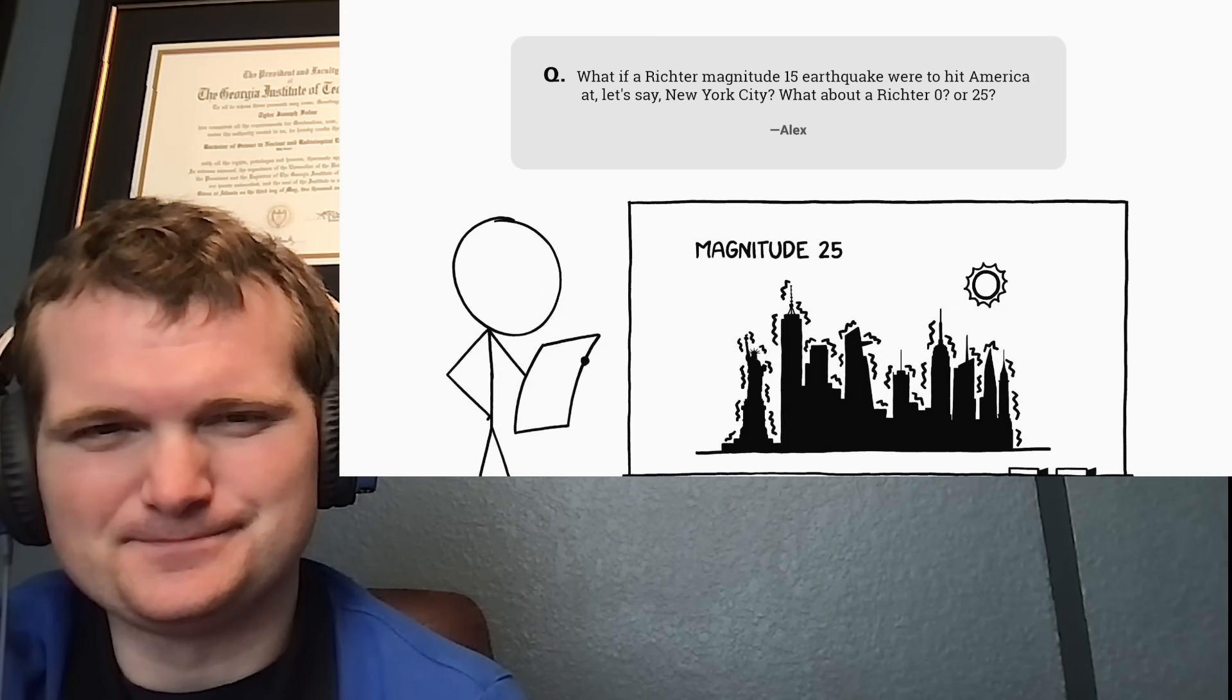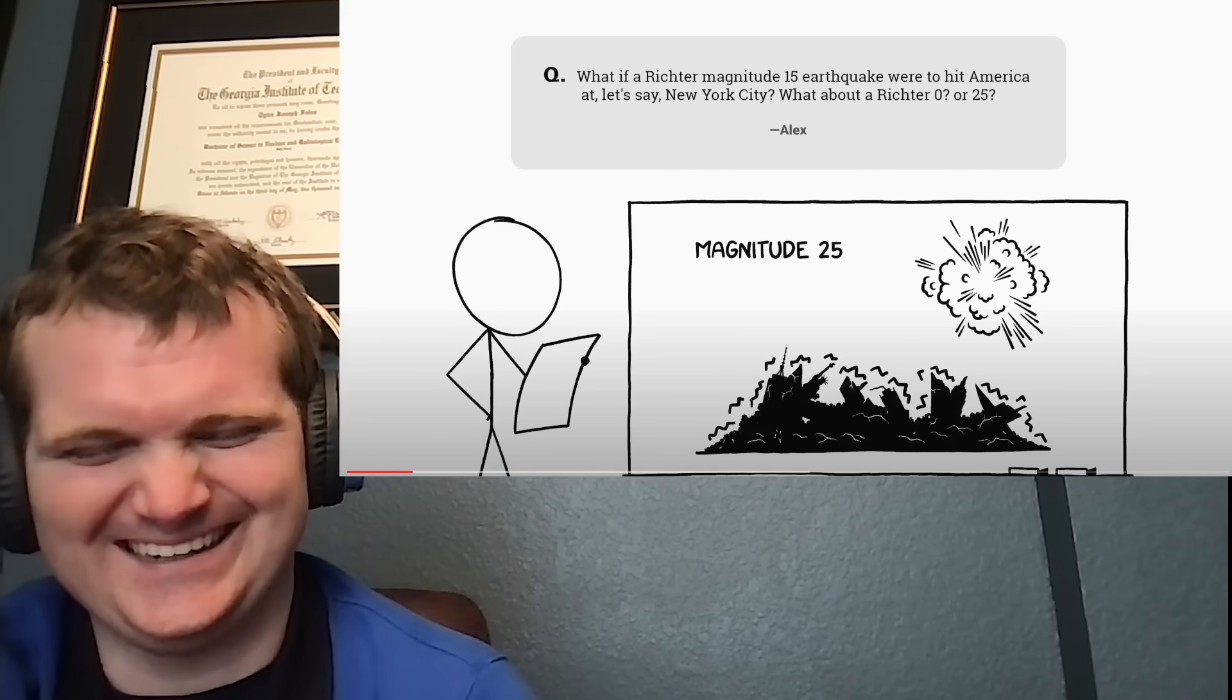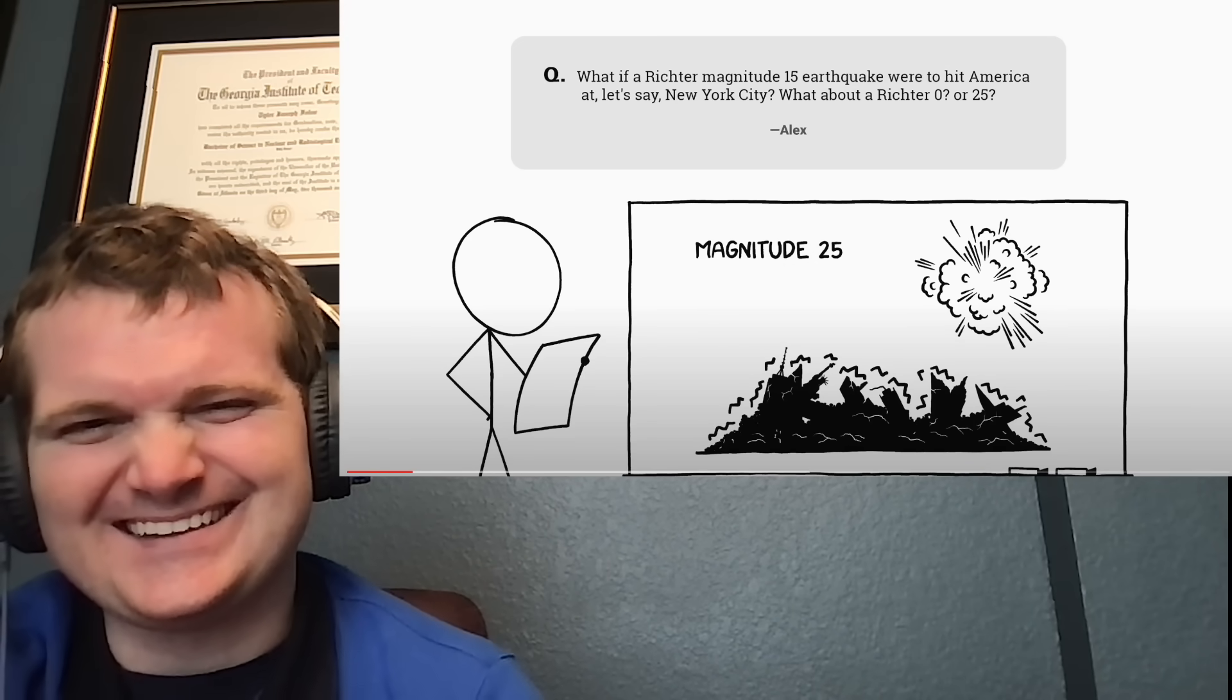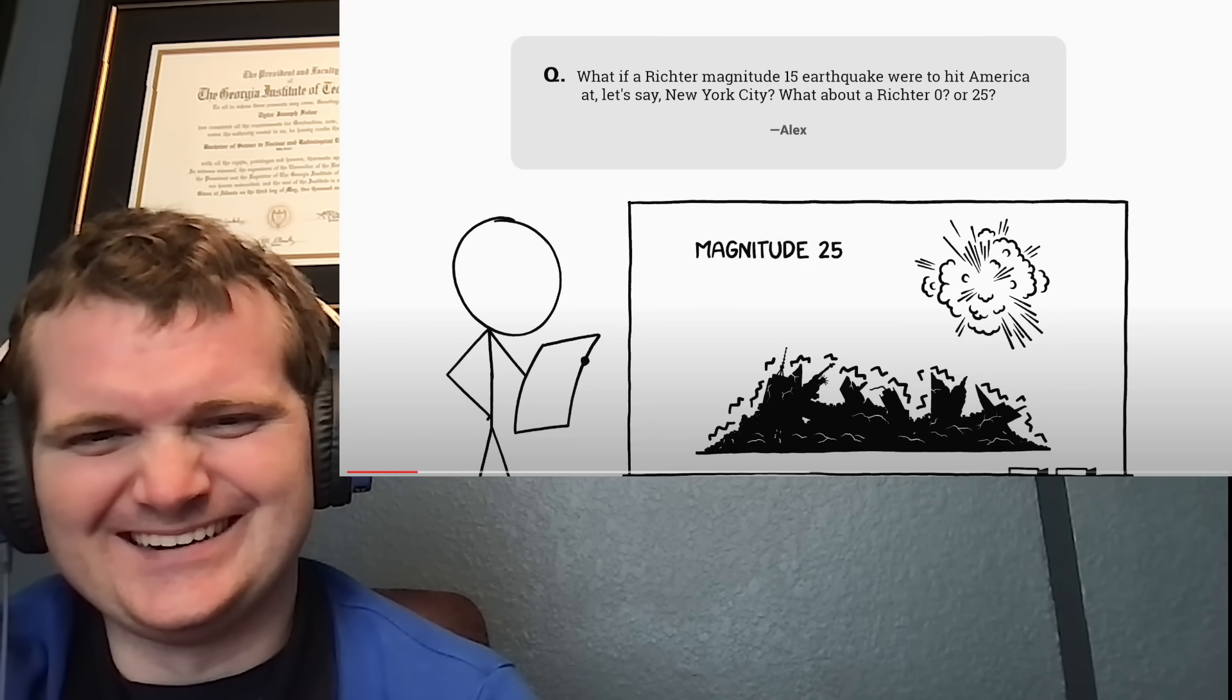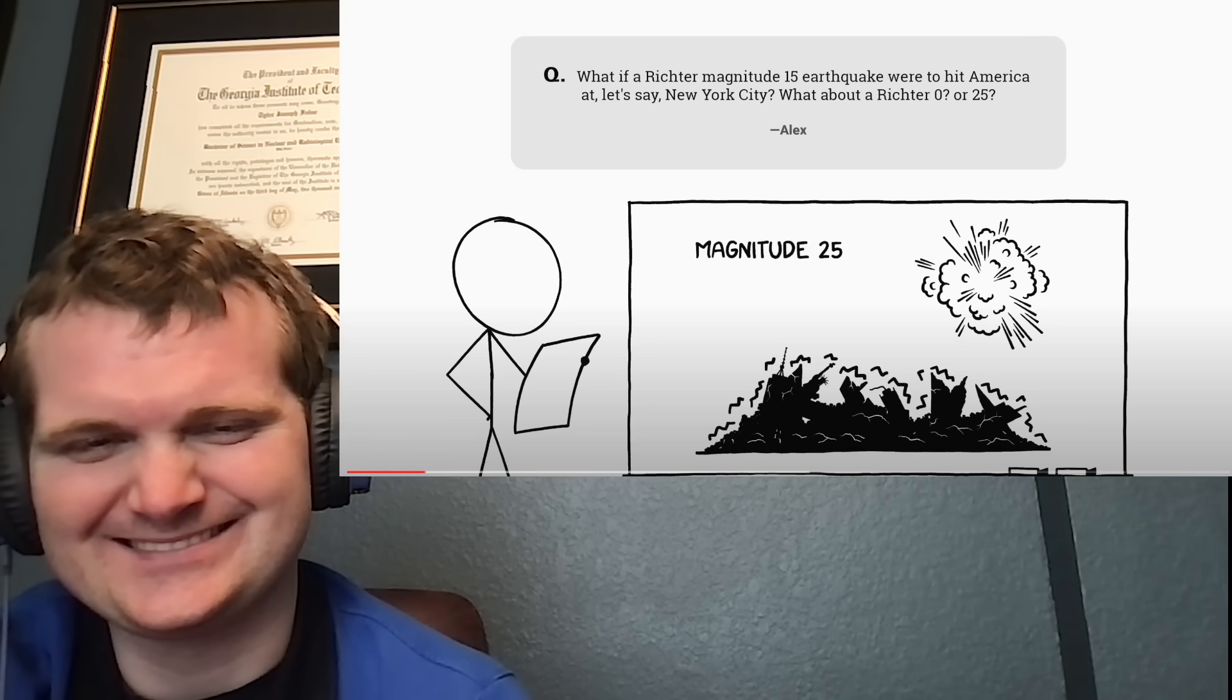Given that a magnitude 25 quake would destroy the sun if one happened there. Destroy the sun. Yeah, there you go. It would certainly destroy New York City. That's awesome. But we're getting ahead of ourselves.